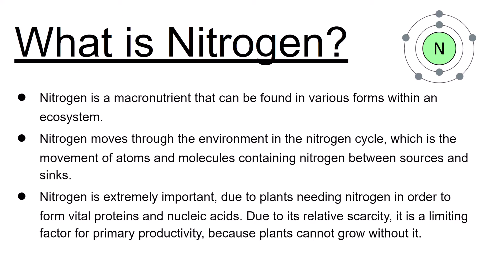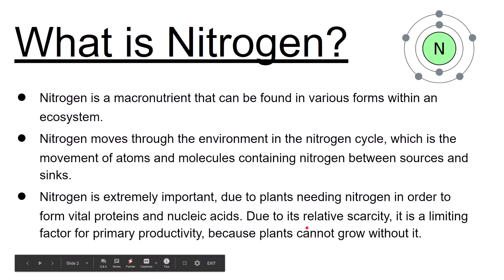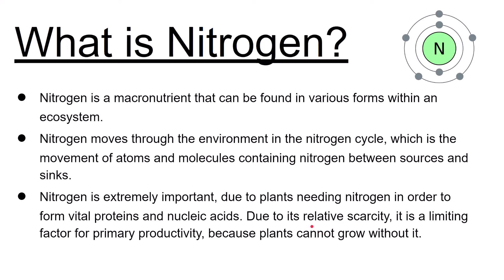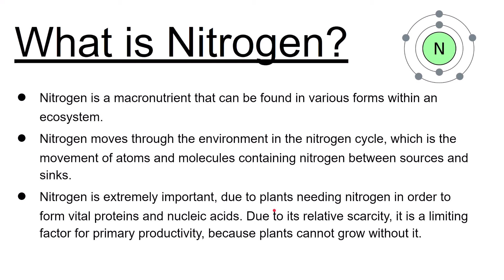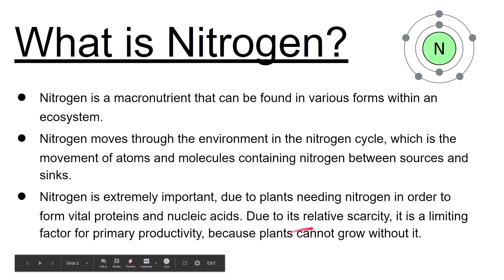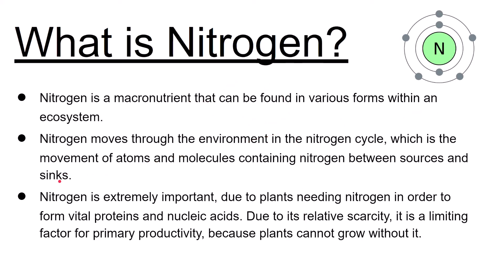Did you know we could not live without nitrogen? Nitrogen is a vital nutrient in ecosystems due to plants needing nitrogen to form amino acids and nucleic acids. This makes it a limiting factor for primary productivity because plants cannot grow without it. So even though there's an abundance of nitrogen in the atmosphere, this atmospheric nitrogen is not usable by plants, so it is scarce to them and that limits their growth. Nitrogen is a macronutrient that moves through the environment in the nitrogen cycle, which is the movement of atoms and molecules containing nitrogen between sources and sinks.